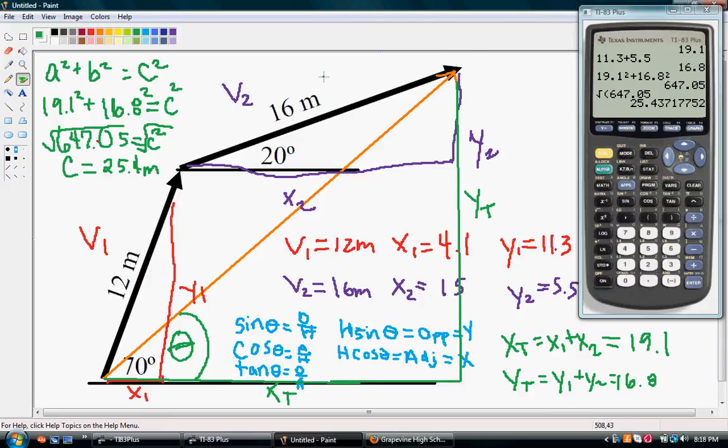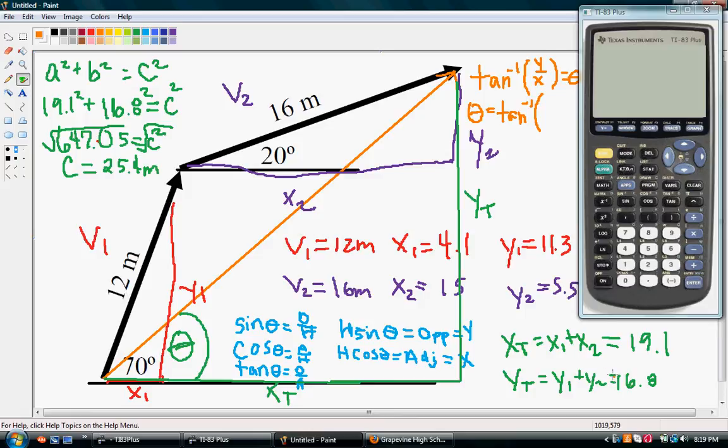So, what we'll end up using is the inverse of tangent, opposite over adjacent, so y over x, and that is going to equal our theta. And then, theta, so our theta is equal to inverse tangent, our total y, which is 16.8, over our total x, which is 19.1.